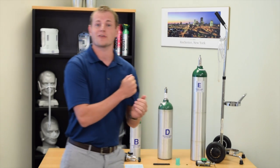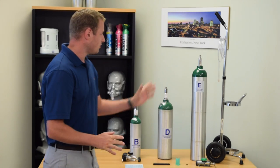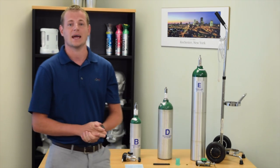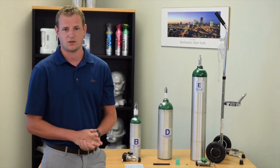Oxygen tanks come in a variety of different sizes and types. You can see in front of us we have an E tank, a D tank, and a B tank, which is commonly referred to as an M6 tank.